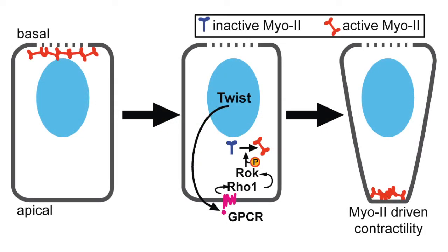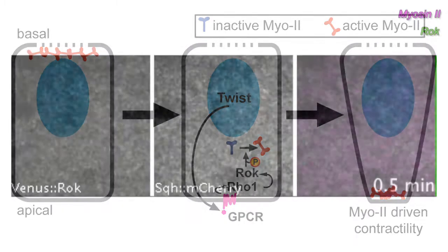Myosin is activated by an upstream pathway that includes the Rho1-GTPase and its effector Rho kinase, or ROCK, which phosphorylates myosin's regulatory light chain to promote the motor's oligomerisation and ATPase activity.